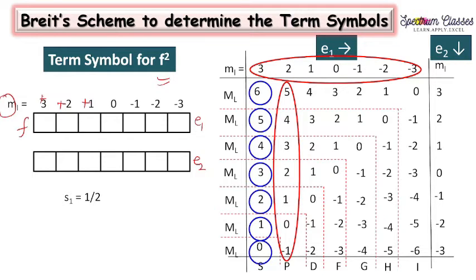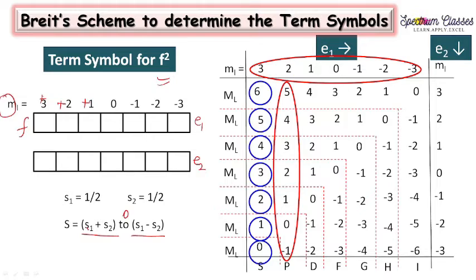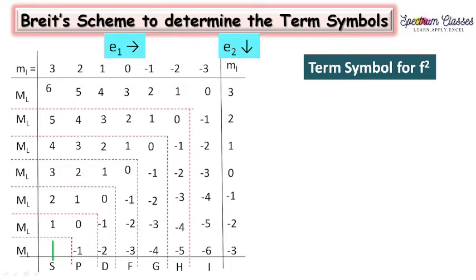Now we move to the spin values. For electron number 1, s1 = 1/2, and for electron number 2, s2 = 1/2. The total spin S ranges from s1 + s2 to s1 − s2, including 0. So s1 + s2 = 1 and s1 − s2 = 0, giving us only two values of S: 1 and 0.